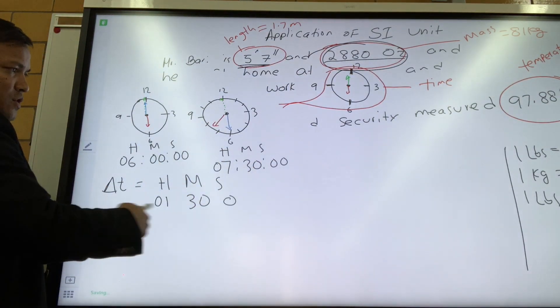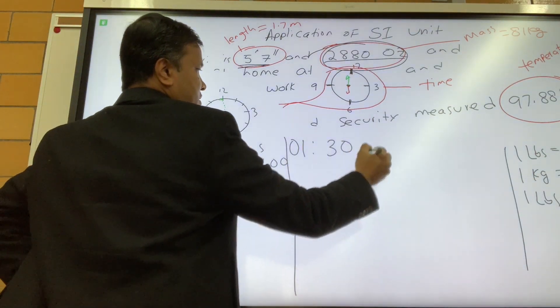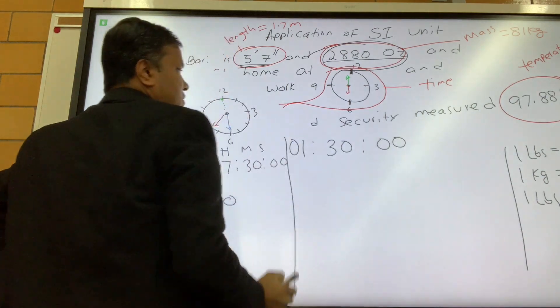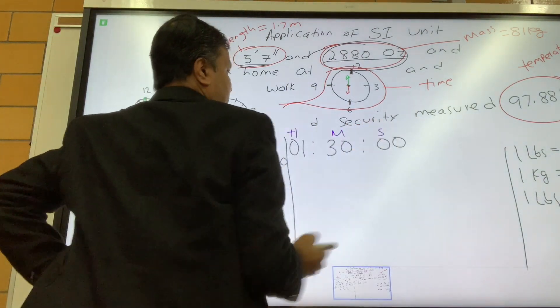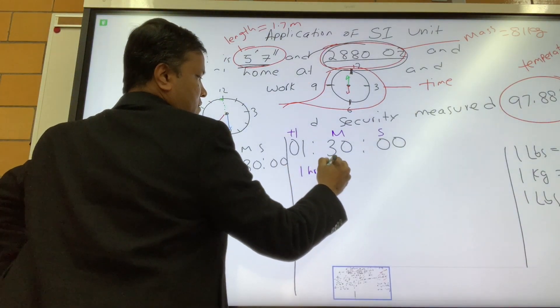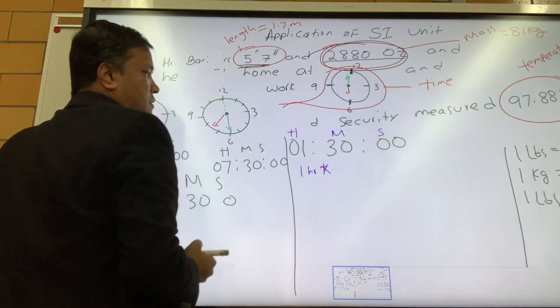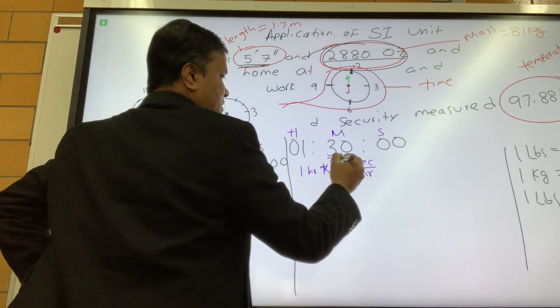So this is 6 o'clock, 6 a.m., and this is 7:30. So 6 and 7:30. So elapsed time is one hour, 30 minute, 0 second. So you're gonna convert one hour to second and 30 minute to second.